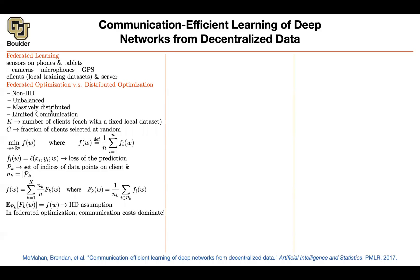The massively distributed nature is actually an advantage — we are going to leverage that. We do need to deal with limited communication. When it comes to federated learning, you don't have highly optimized network connections between devices, so communication costs are going to dominate. We need to reduce the number of communications between devices and the server. How? Increase parallelism — use more clients per iteration. Also, you are not bound to taking one stochastic gradient descent step inside each device; you can increase computation by taking a couple of SGD steps and then communicating the model weights with the server.